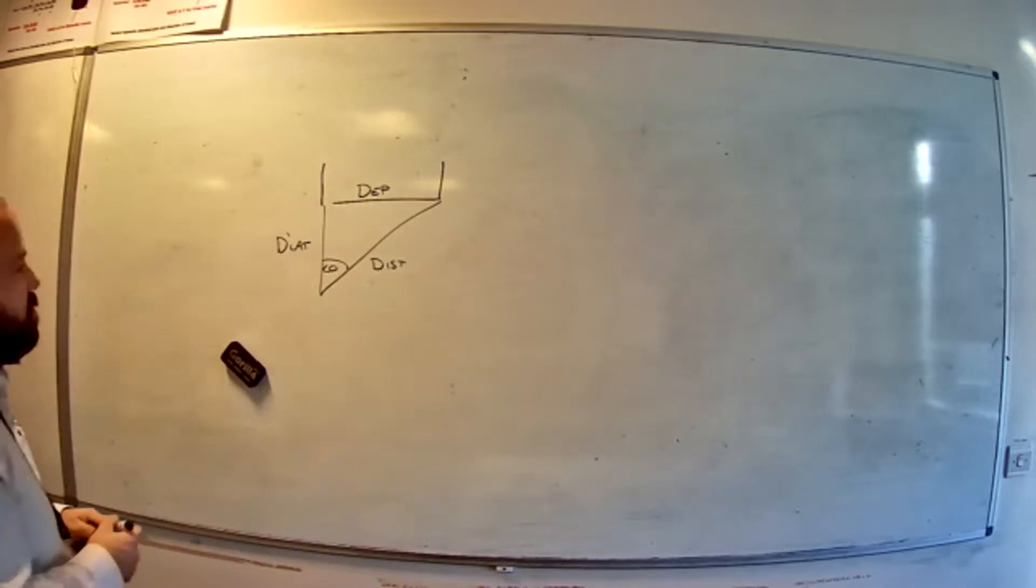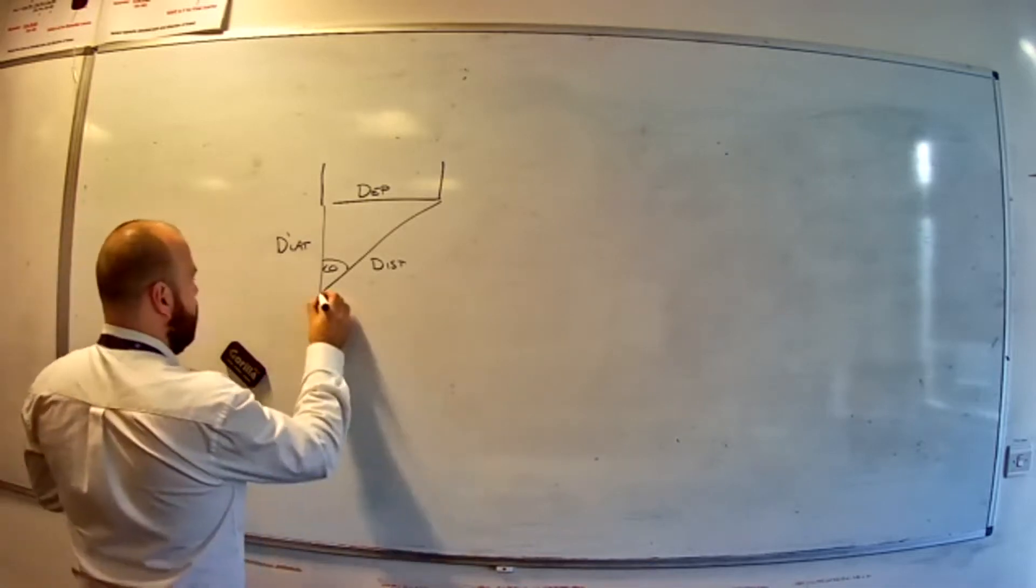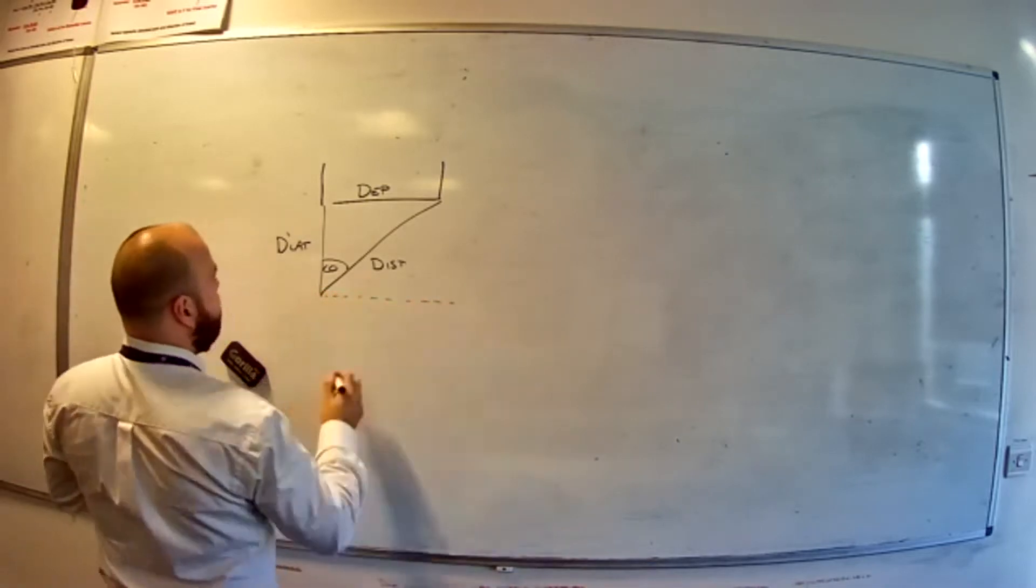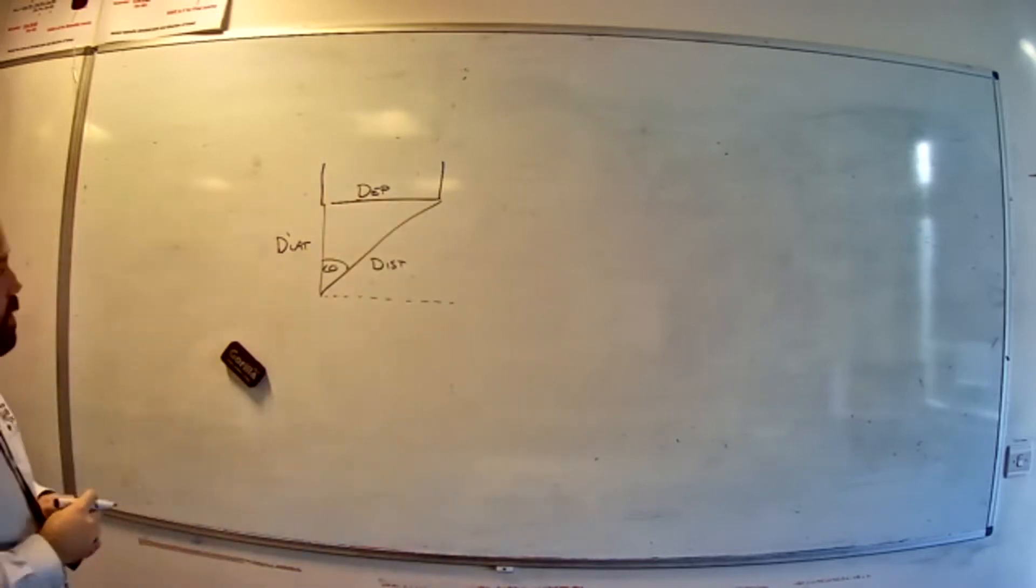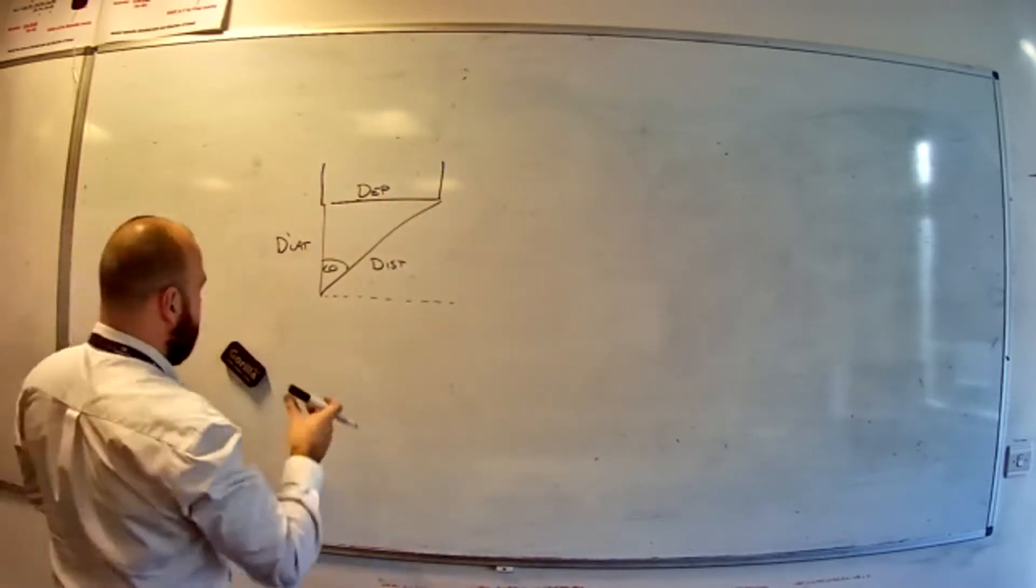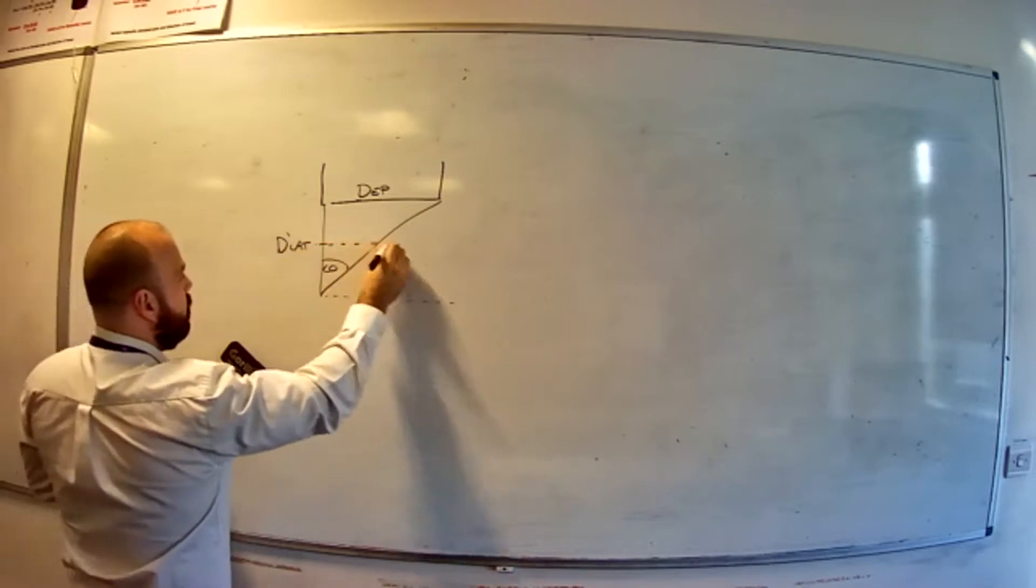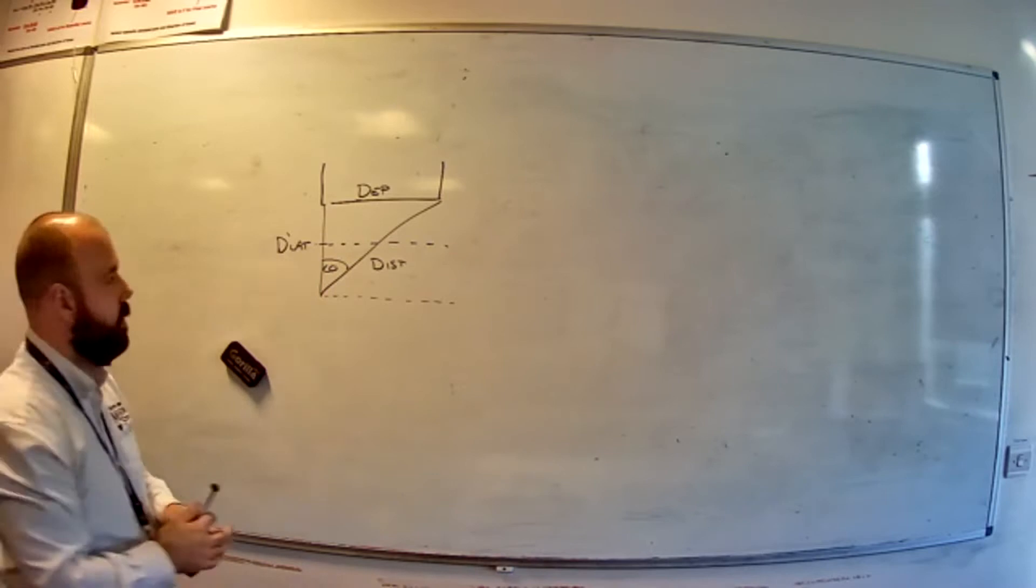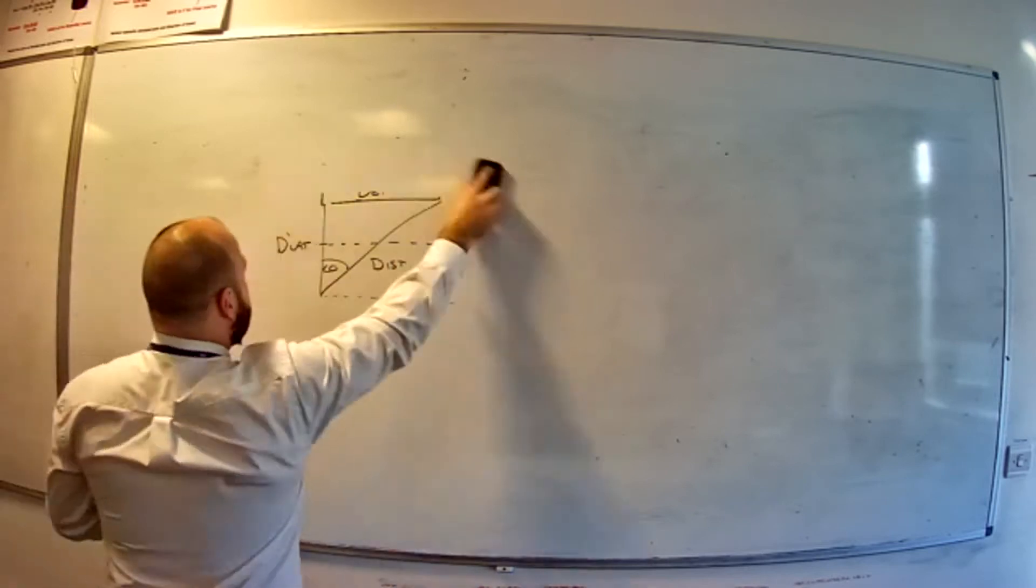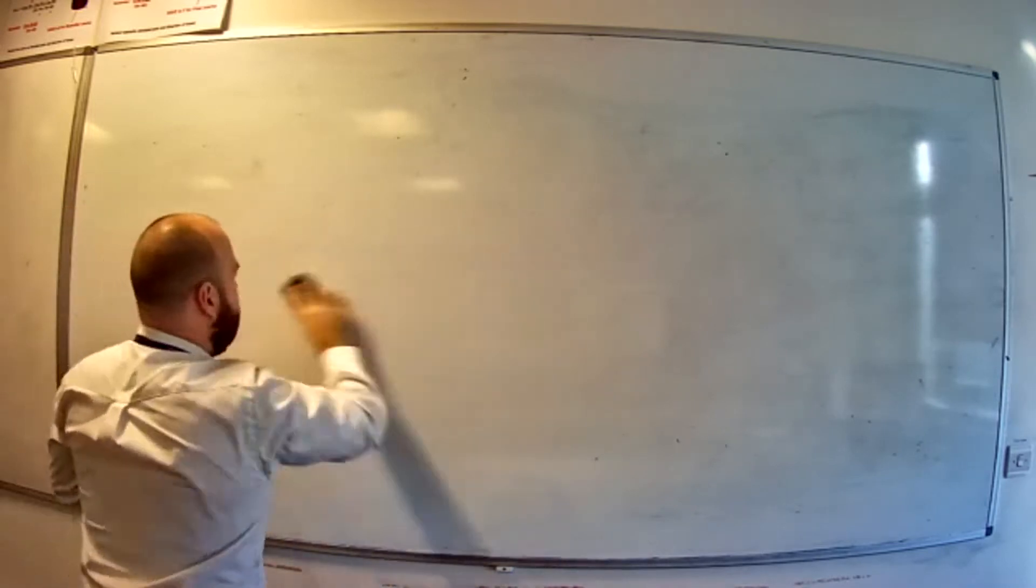But it changes for every latitude. So what we do is we get a mean latitude. We know this departure on this latitude, we know what it is on this one. What we can do is say, well, okay, I'll tell you what. Let's work it out for the mean, for the average, for the midpoint, and we'll just call it quits at that. So that's why we use departure, not DLong.